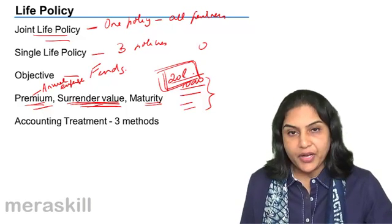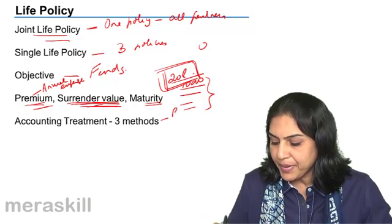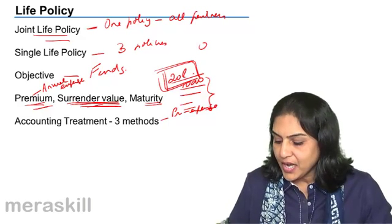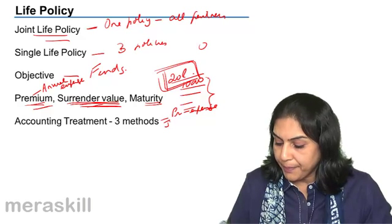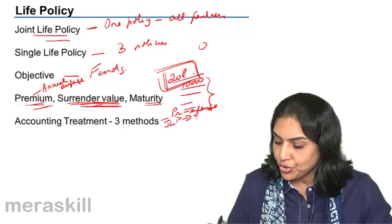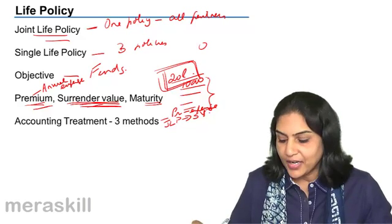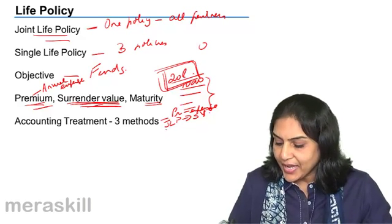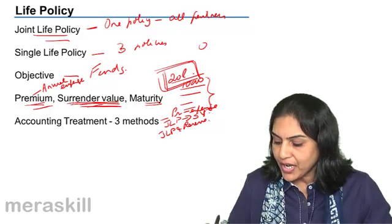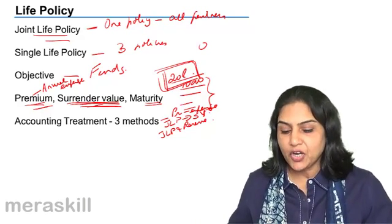What are the accounting treatments? There are actually three methods. One is to treat the premium as expense. We shall discuss in detail all three methods. Another is to keep an asset account, joint life policy account asset, and show it always at surrender value. Show it at surrender value. And the third method is similar to the first method, except that along with the joint life policy account, we also have a joint life policy reserve account.